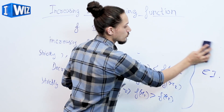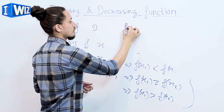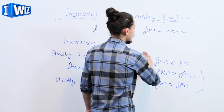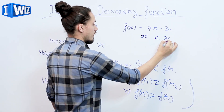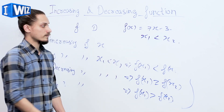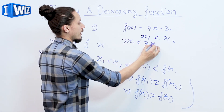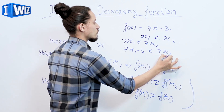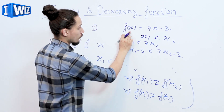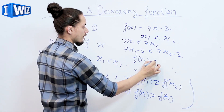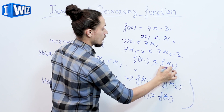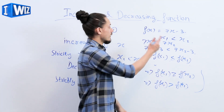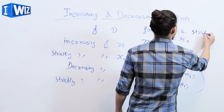For example, let f(x) equals 7x minus 3. We have to prove that it is strictly increasing. Suppose x1 is less than x2. Multiplying both sides by 7 we get 7x1 less than 7x2, and subtracting 3 from both sides we get 7x1 minus 3 less than 7x2 minus 3. This is f(x1) and this is f(x2), so f(x1) less than f(x2) implies f(x) is strictly increasing.